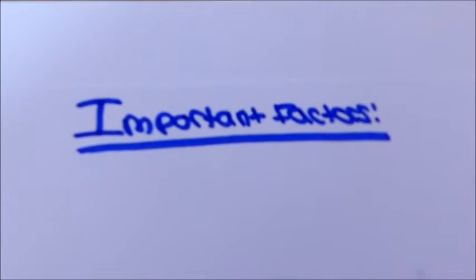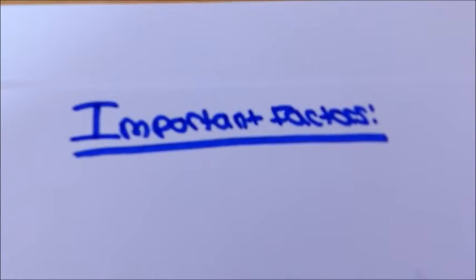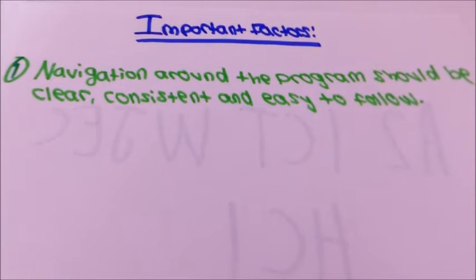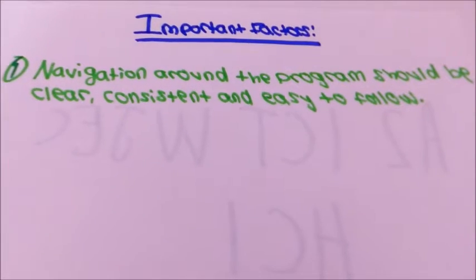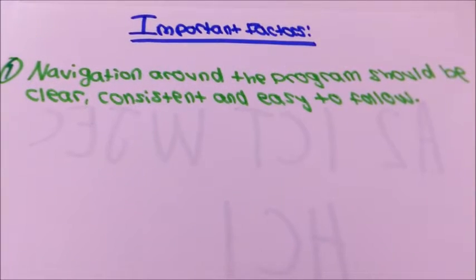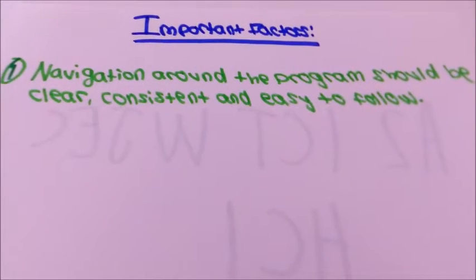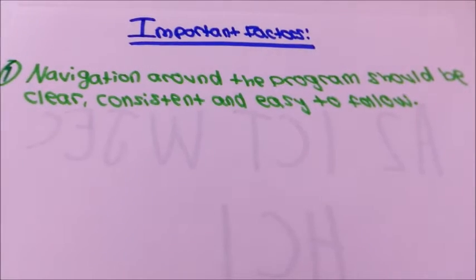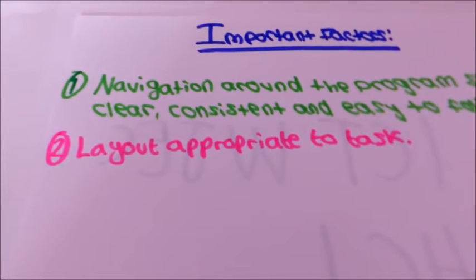We're going to start off with the important factors that are required to make a good HCI. First of all, navigation around the program should be clear, consistent and easy to follow. This speeds things up if there is a similar routine through the programs as users do not have to keep learning new things. There should be a layout that is appropriate to the task.